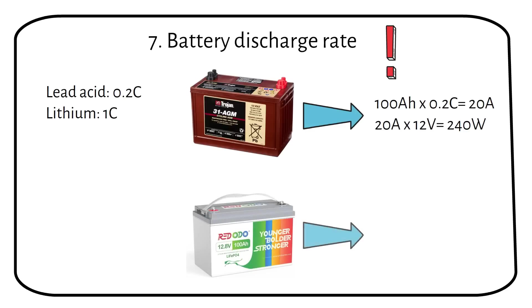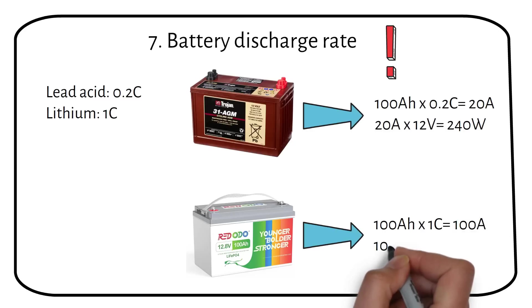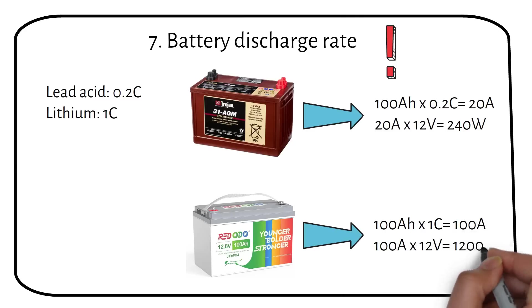In contrast, a 12V 100Ah lithium battery with a 1C discharge rate can handle 100A. This means it can support a 1200W load. Therefore you can use a 1000W inverter with a single 12V 100Ah lithium battery.